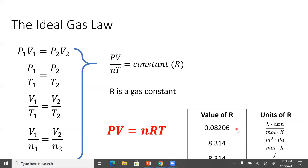There are three different R values depending on what units your pressure is in. If pressure is in ATM, R = 0.08206 L·atm/(mol·K). If pressure is in kilopascals, R = 8.314 L·kPa/(mol·K). And R = 8.314 J/(mol·K) for energy-related applications. You don't have to memorize the R values — you just have to make sure the R value matches up with the other units in the problem.